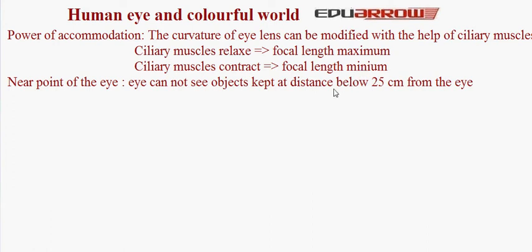For example, the near point of the eye: we cannot see objects kept below 25 cm from the eye. This is due to the limit of the power of accommodation.